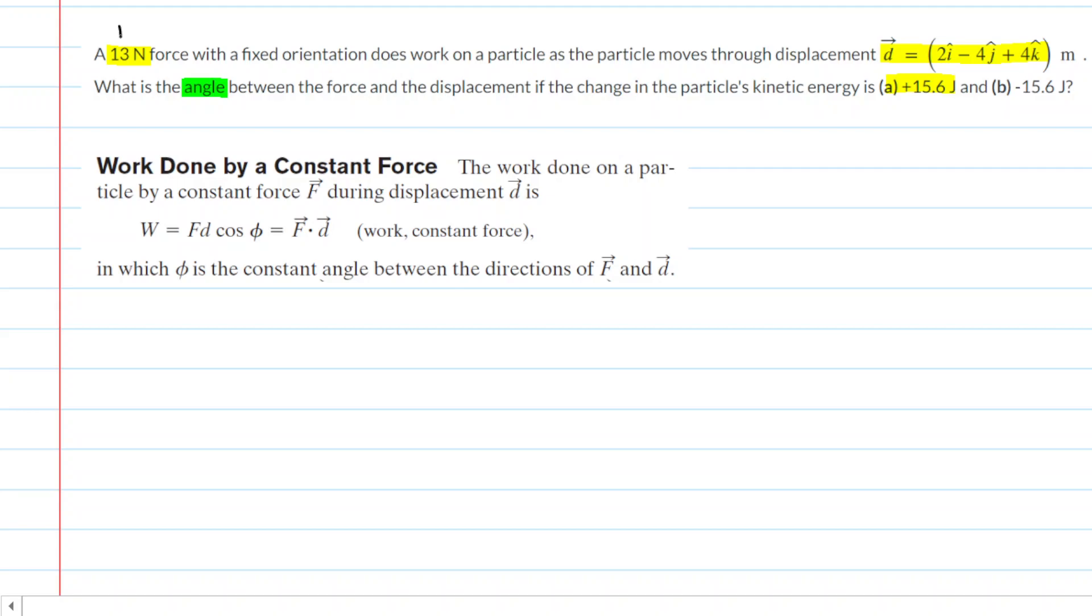We need a relationship between force, displacement, work, and angle. If we look at the equation for work, one of the equations that would come in handy is this one right here. We can see that work is equal to the magnitude of the force times the magnitude of the displacement times the cosine of the angle between the force and displacement vector.